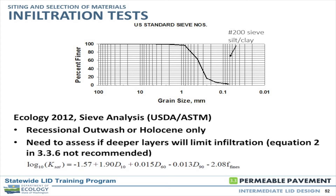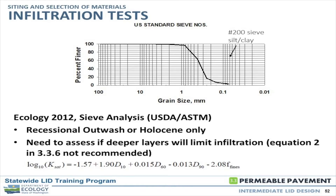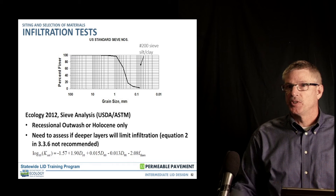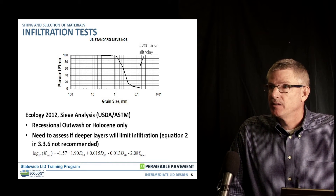Once you've found an area you're interested in for infiltration, infiltration testing is the next step. There's a method in the manual where we can do a grain size distribution test, and there's a formula that allows you to come up with a ballpark number for infiltration. We encourage people to use that with caution and apply the correction factors and variability adjustments. That formula is only valid for recessional outwash or Holocene deposits — recent deposits in an alluvial environment. Once you get into fine-grained soils, the formula falls apart and is not recommended.